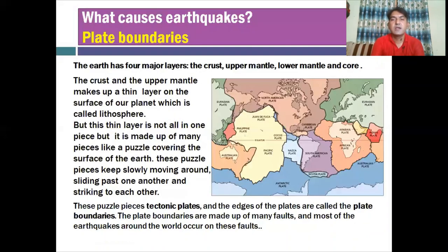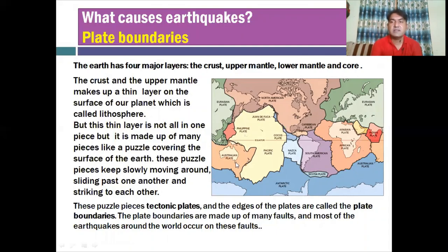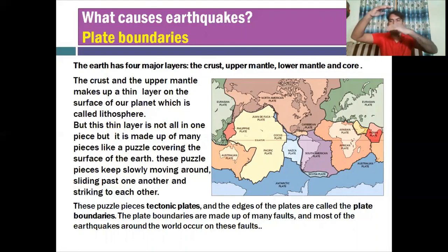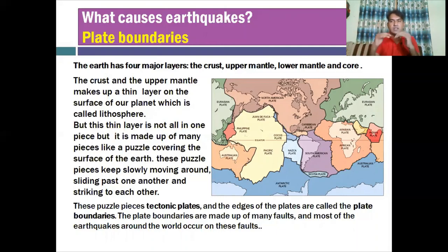Now we are coming to the scientific background. What causes earthquakes? One of the biggest reasons is plate boundaries. As you all know, the Earth has four major layers: the crust, the upper mantle, the lower mantle, and the core. The crust and the upper mantle make a thin layer on the surface of our planet called the lithosphere. When we combine the crust and the upper mantle together, it makes the lithosphere.